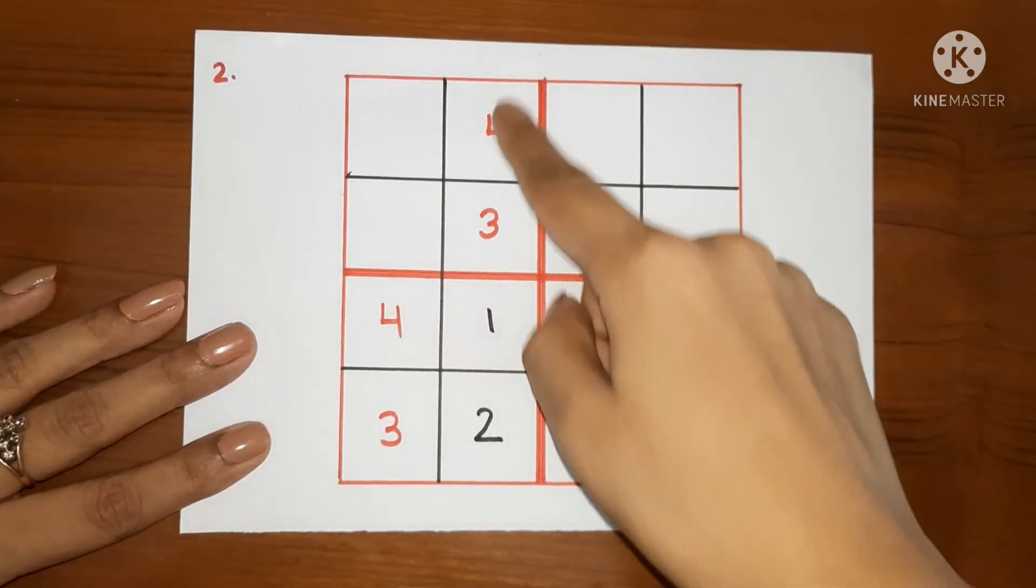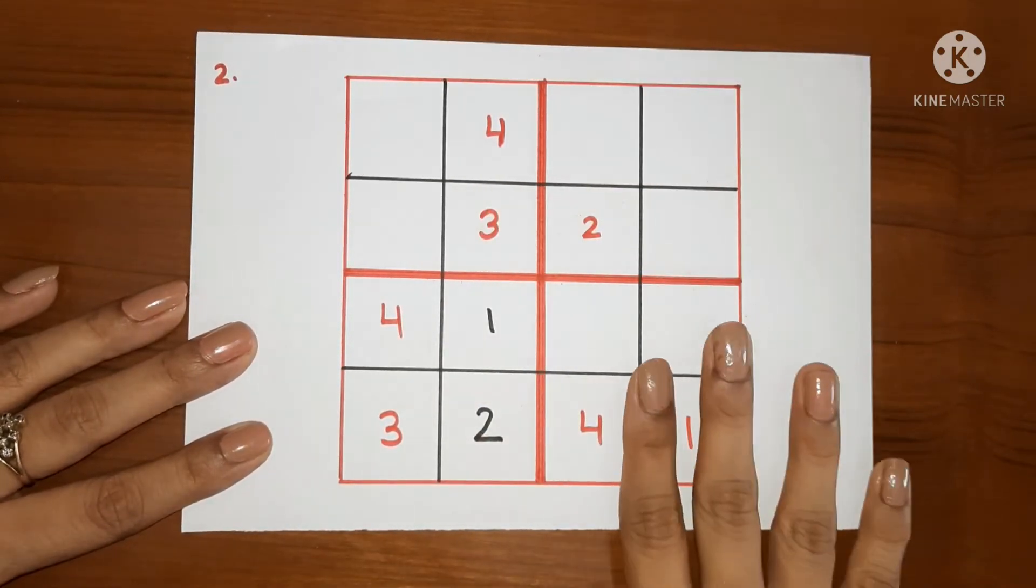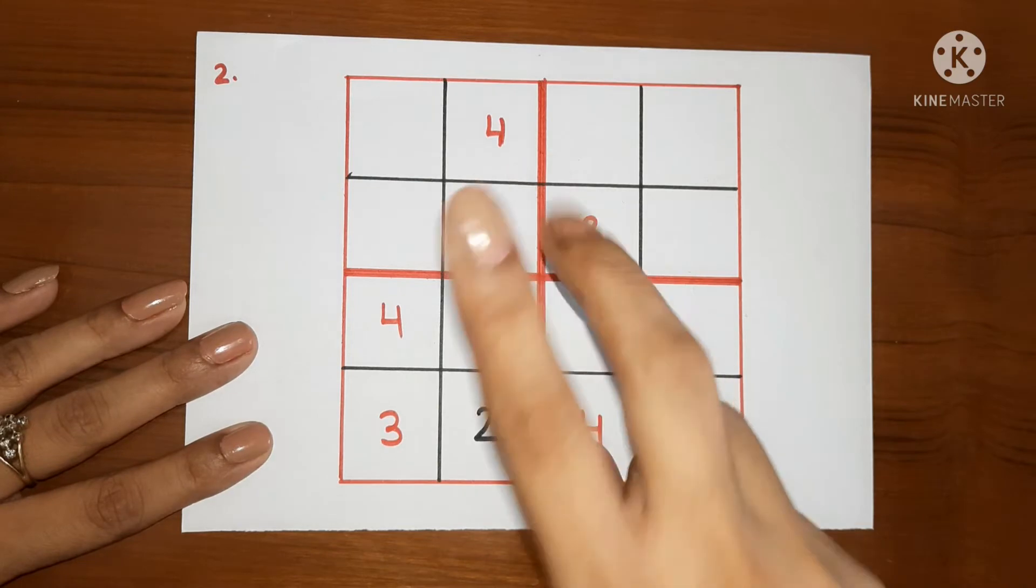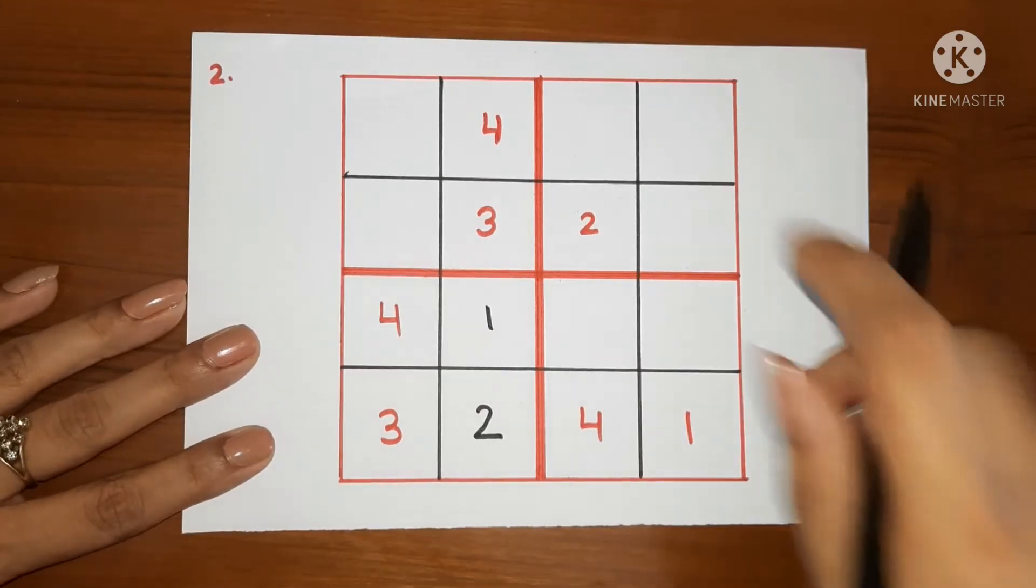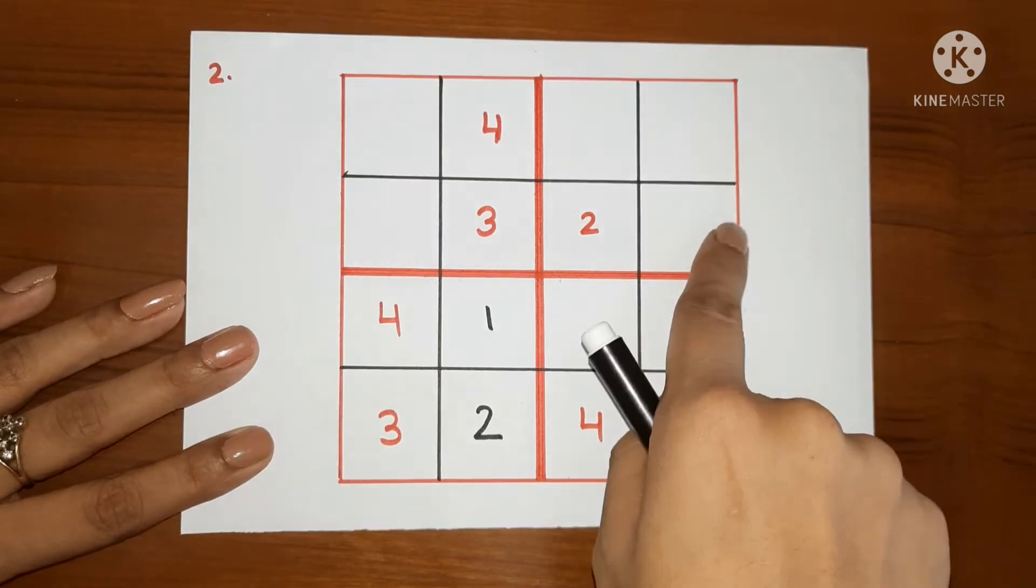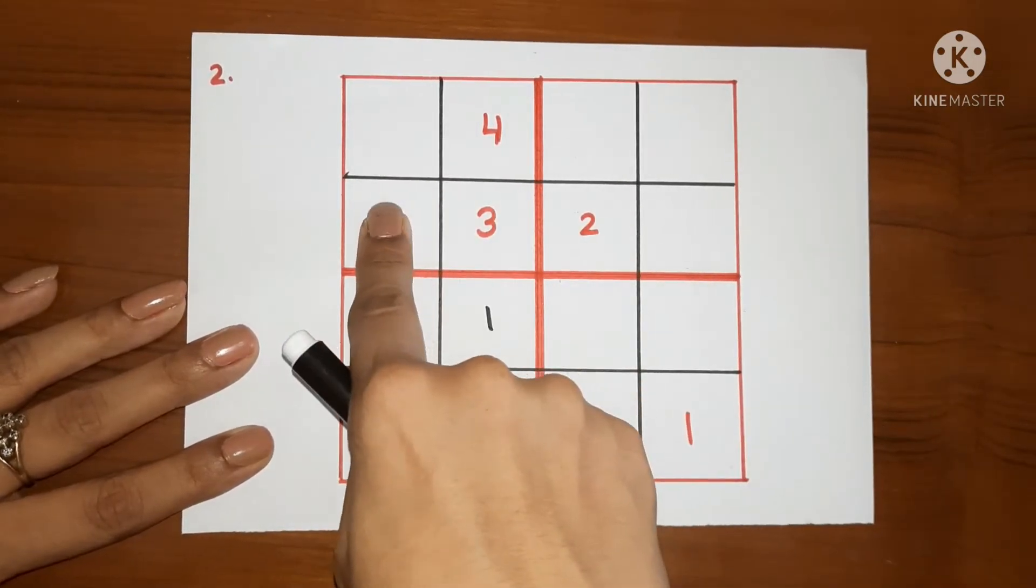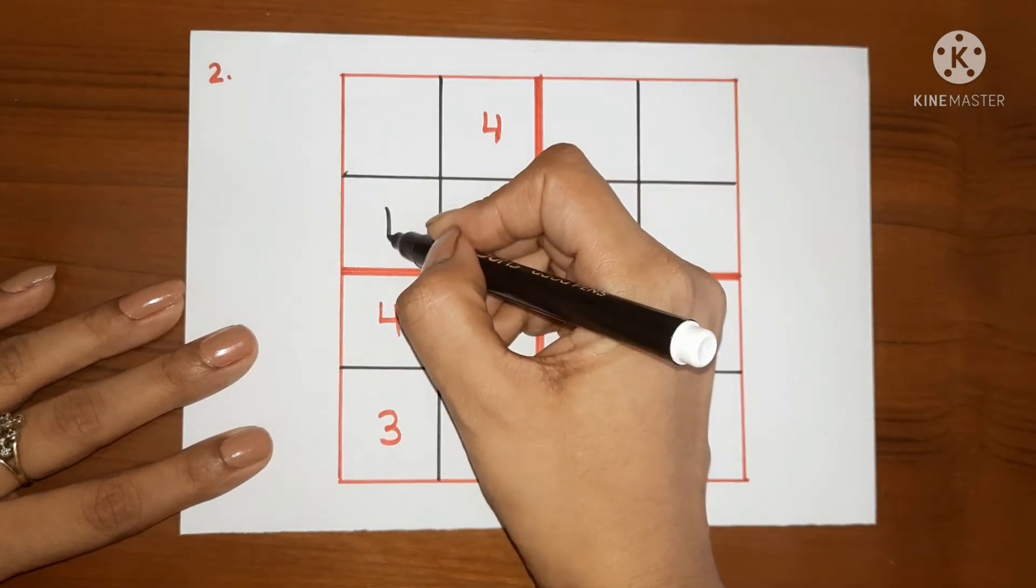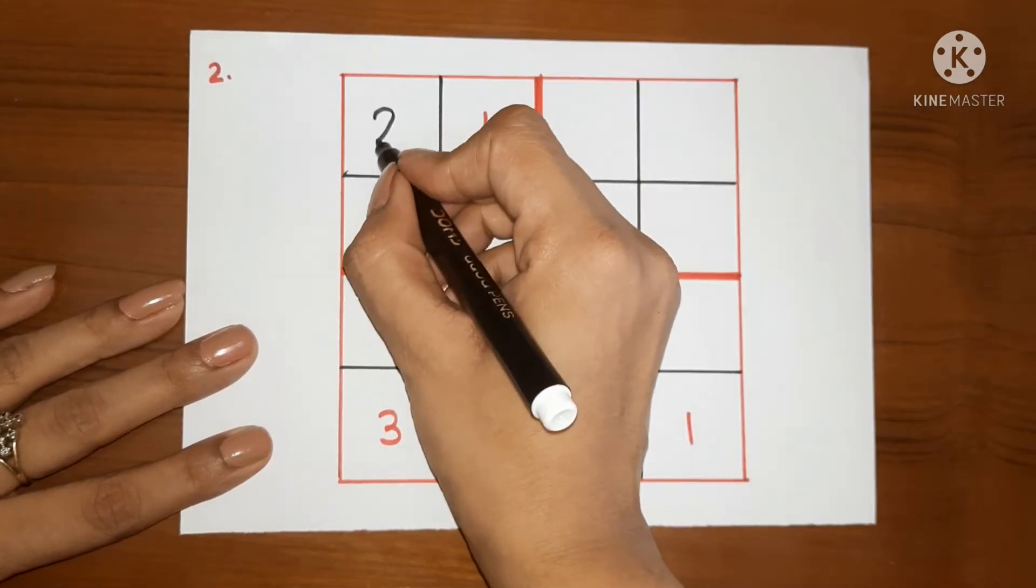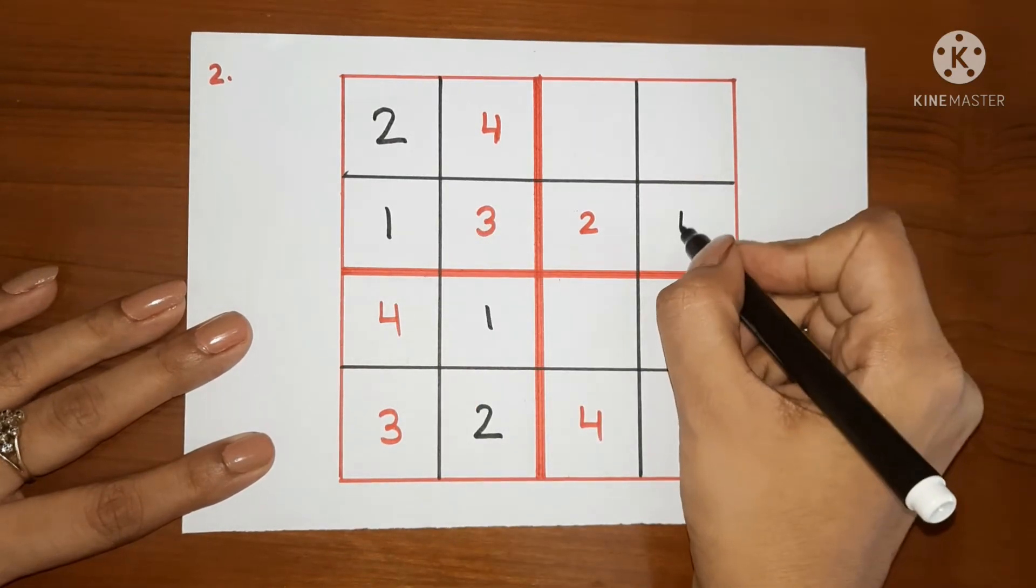Next, no column or row or a box has 3 numbers in it. So we will look for 2 numbers. We will complete this box first. We have to fill 1 and 2 only and as 2 is here in this row, so we cannot write 2 here. So we will write 1 here and 2 will come here. 1, 2, 3. We will write 4 here.